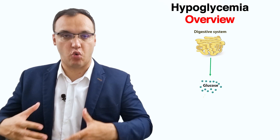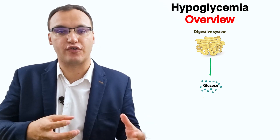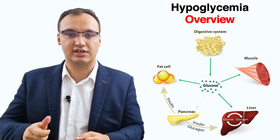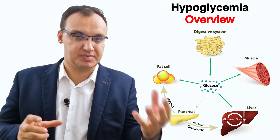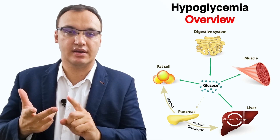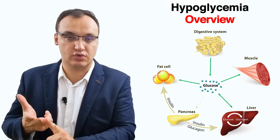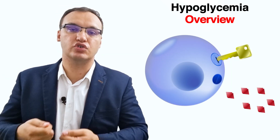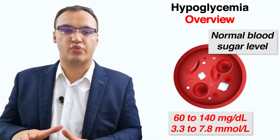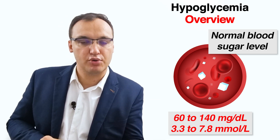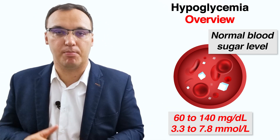While the body is quite good at extracting glucose from the foods we eat, it relies on a hormone called insulin to get the glucose inside the cells of specific organs like the liver, fat cells, and muscle cells. We can think of insulin as a key — without insulin, the glucose just remains in the blood. The usual blood glucose range is about 60 to 140 mg per deciliter, or 3.3 to 7.8 millimole per liter.